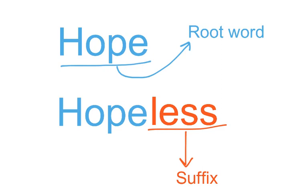What happens if you add to your root word? For instance, we could add a suffix. A suffix is added to the end of a word. I know that the suffix less means without. That means that the word hopeless means without hope.